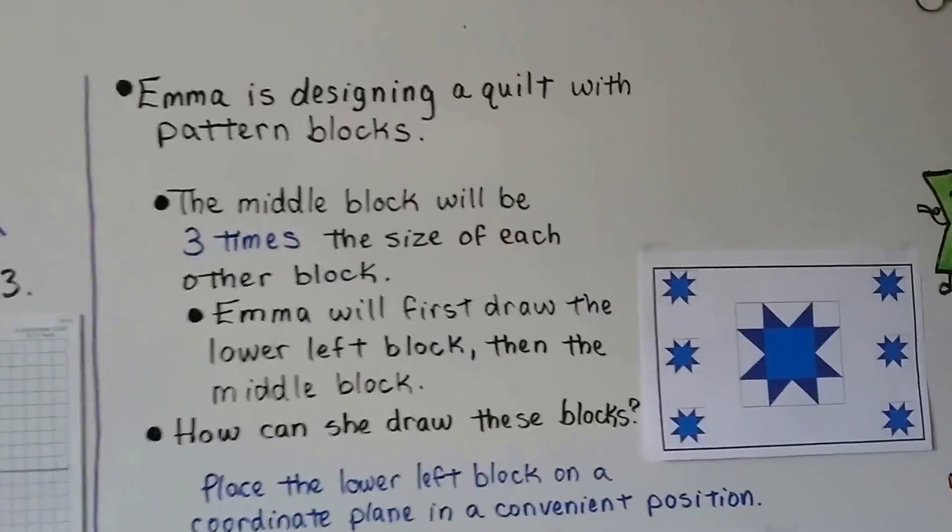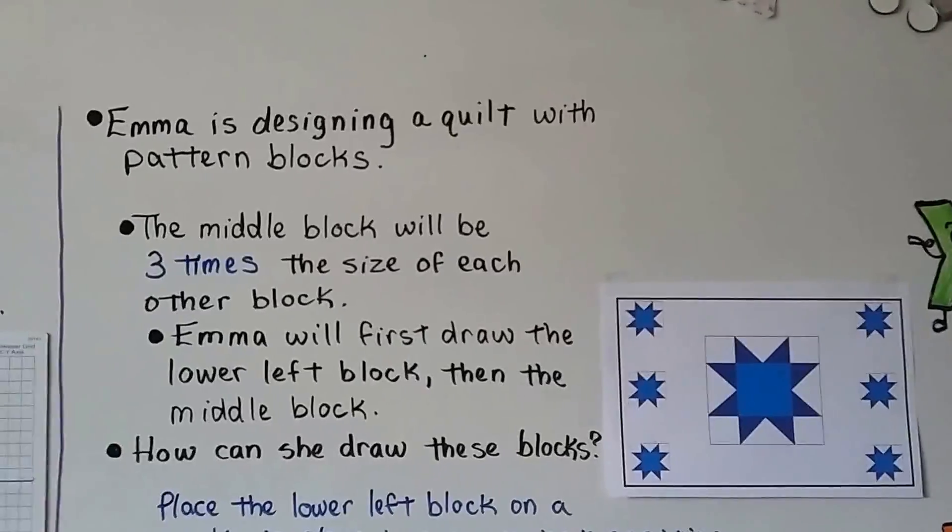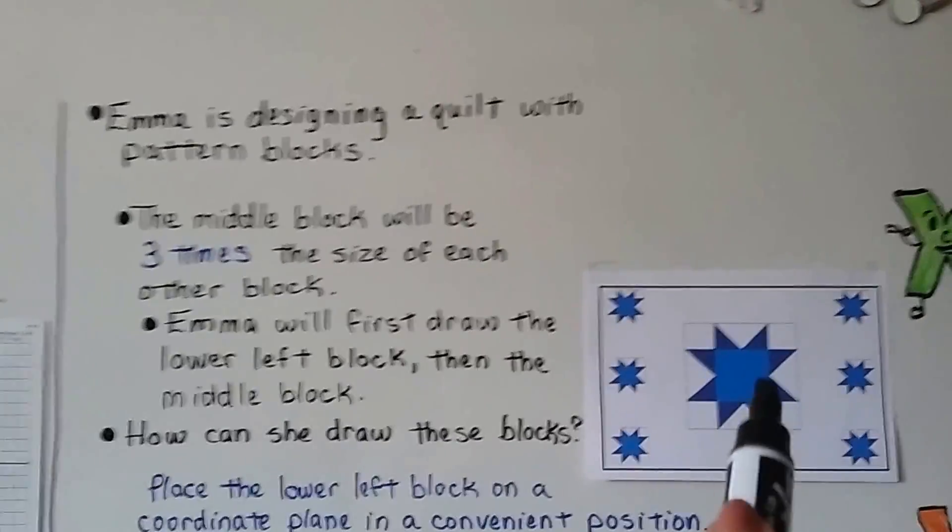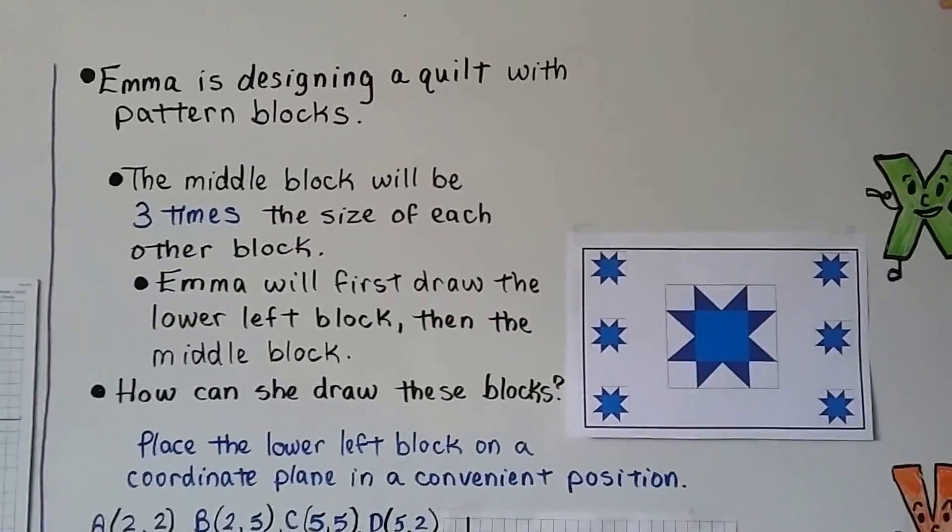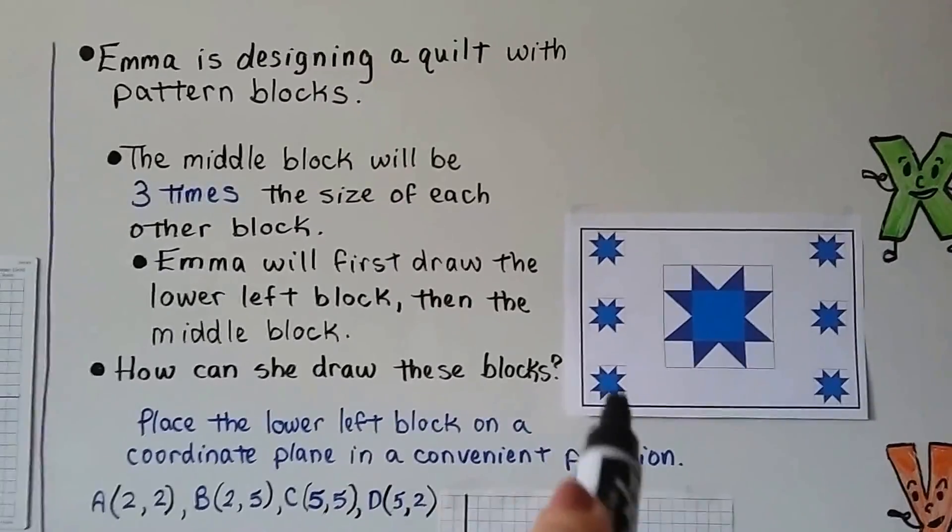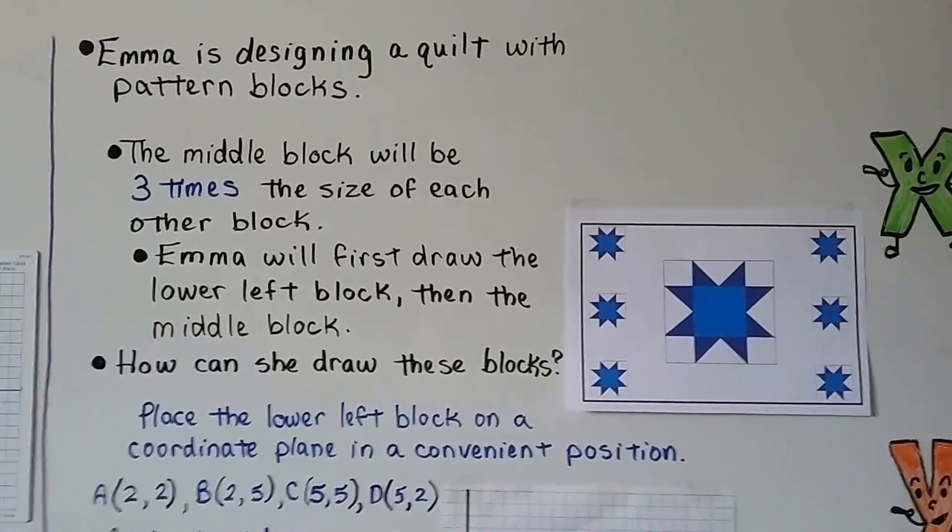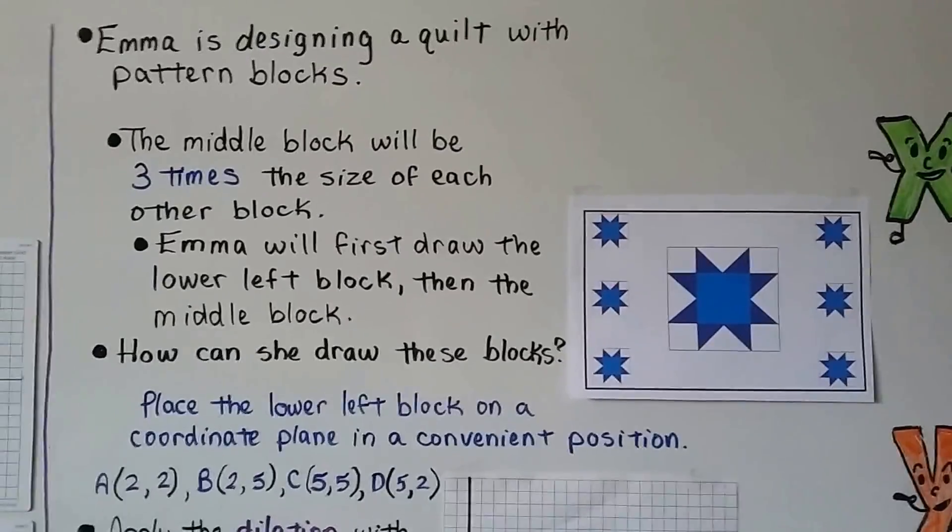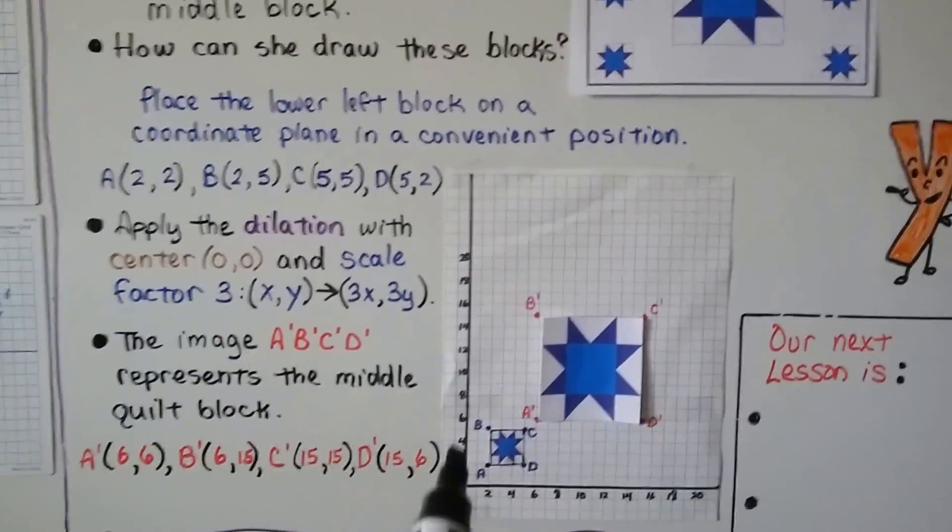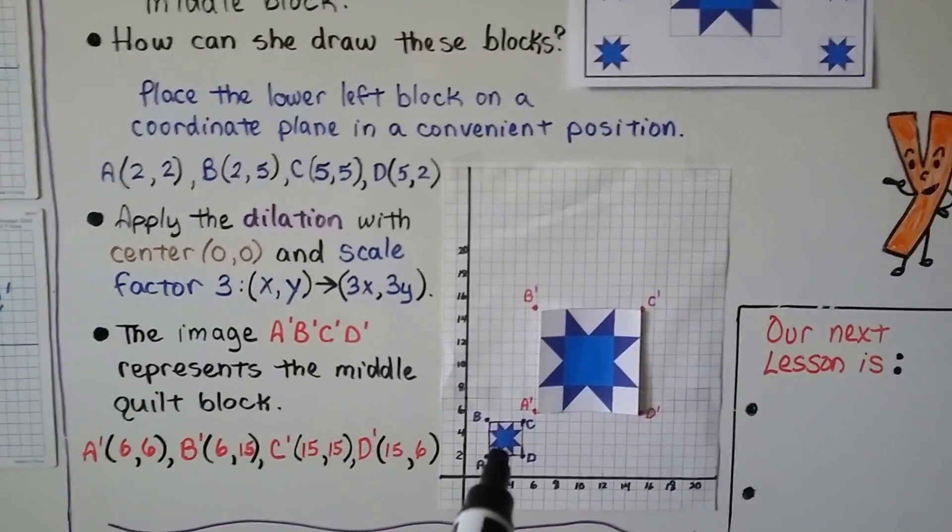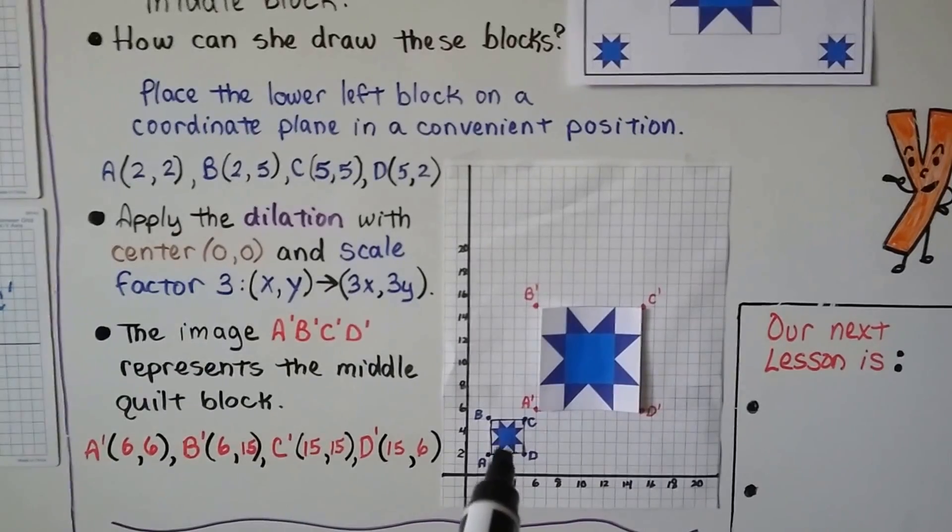Emma's designing a quilt with pattern blocks and the middle block will be three times the size of each other block. So Emma will first draw the lower left block then the middle block. So how can she draw these blocks?